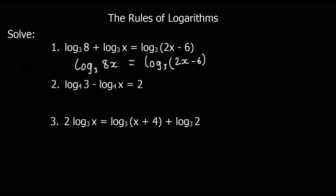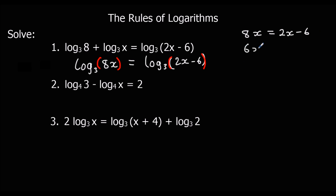We now have log base 3 on both sides, so the arguments must be equal: 8x equals 2x minus 6. Subtracting 2x from both sides gives 6x equals minus 6, and dividing by 6 gives x equals minus 1.